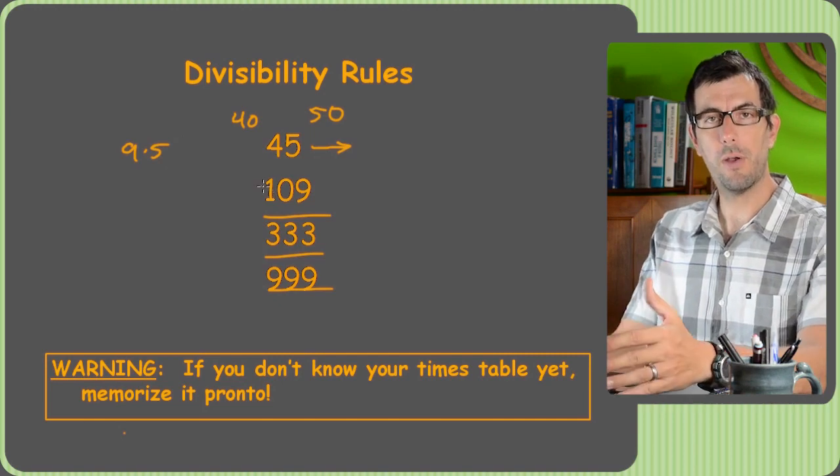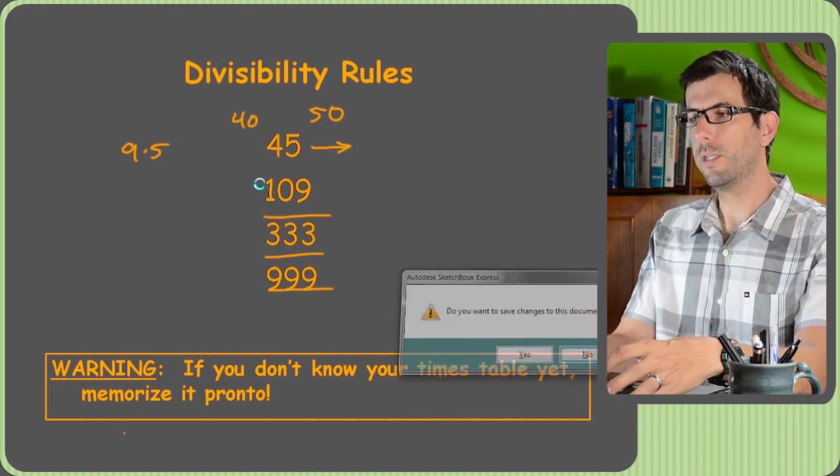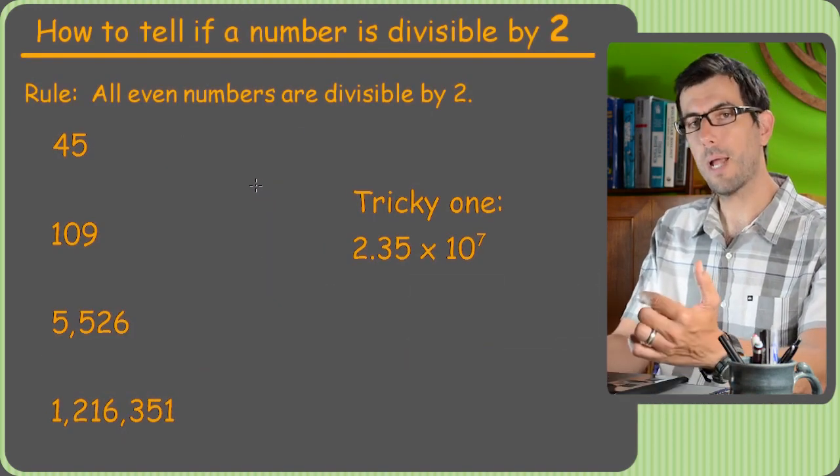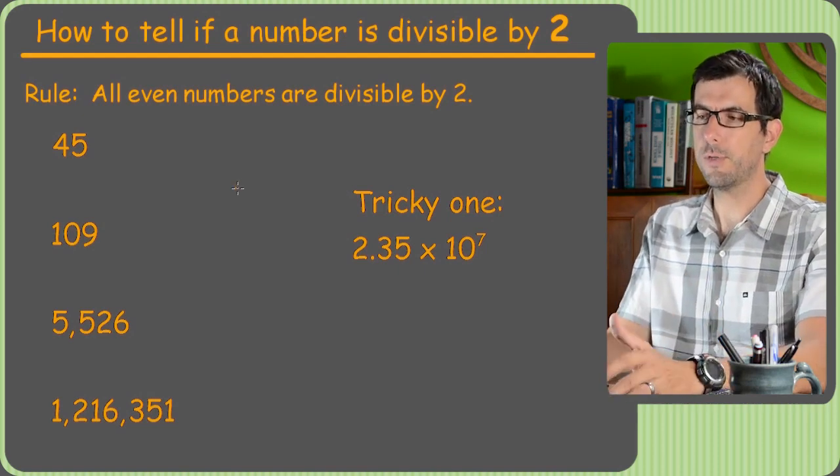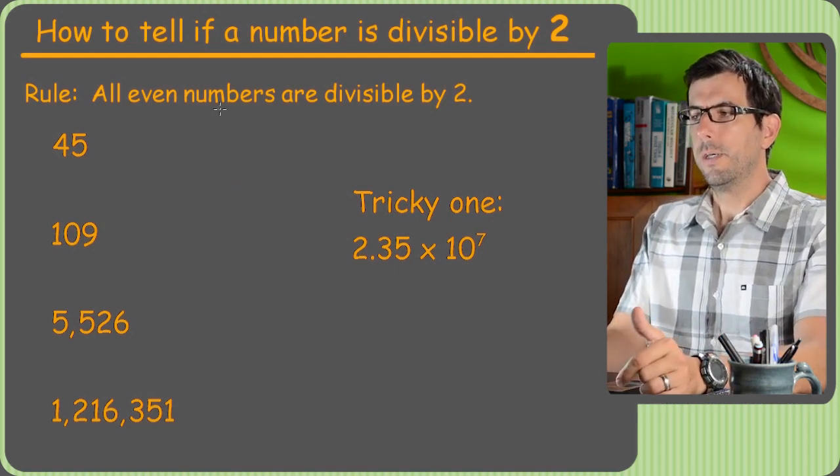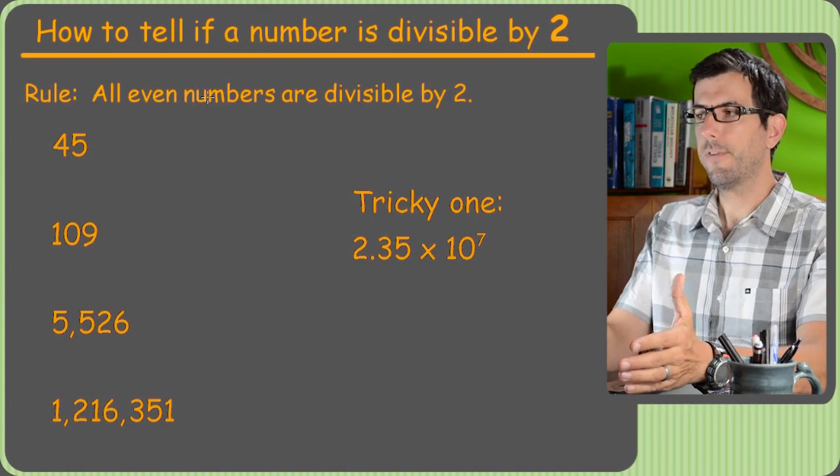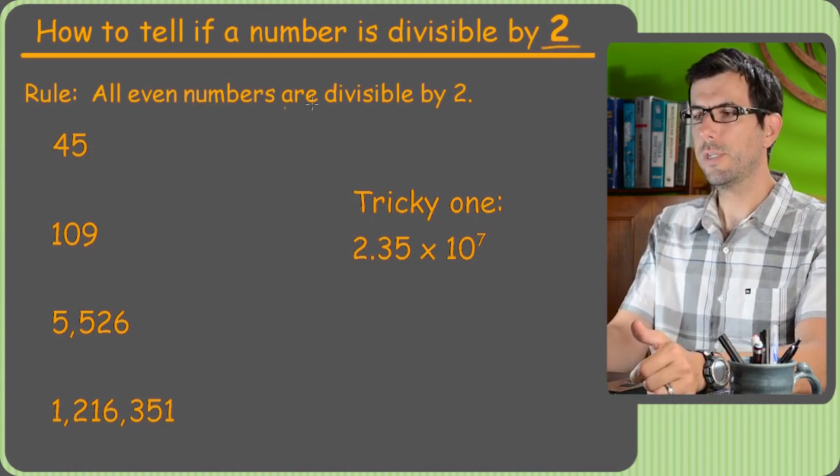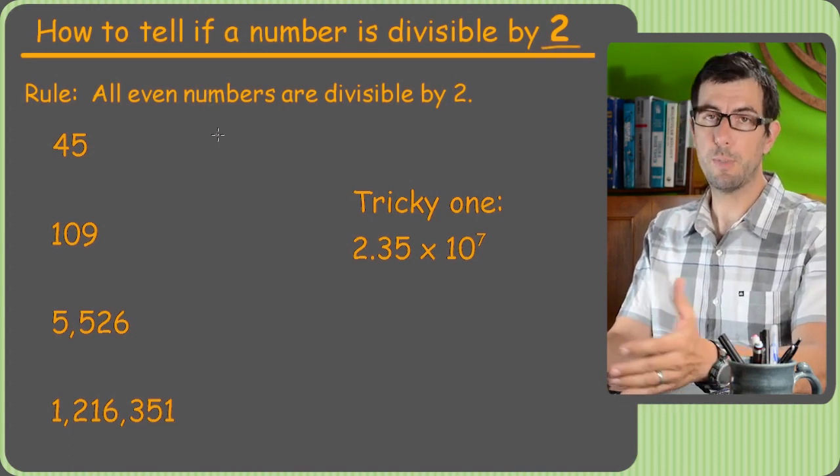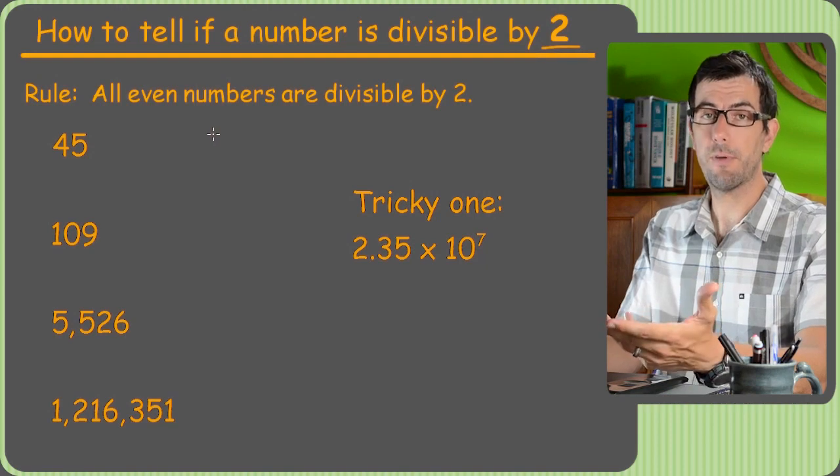So keep that in mind. If you ever see a smaller number, we're just going to want to do it using our times tables. And I'll keep pointing out problems in this video where times tables are better. So let's start with the first number first, 2. The question is, how do you figure out if a number is divisible by 2? If you're trying to factor a number, for example.